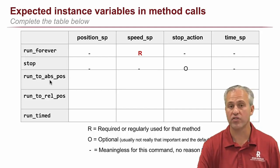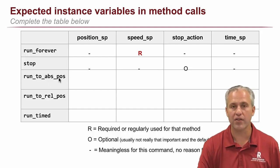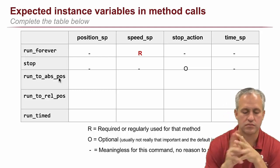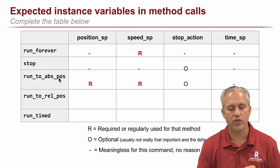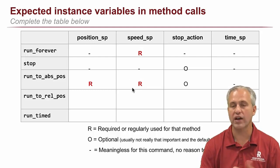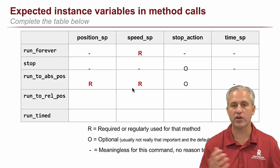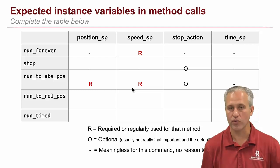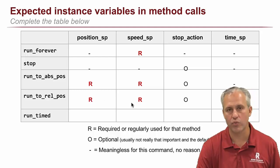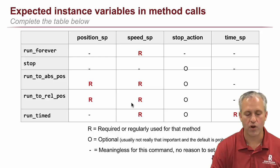Run to absolute position. This is the first one that's like meaningful. So think about this one for a minute. So which ones would you probably pass in to this command? So this one you should really pass in a position because you're going to have a target for it stops. The speed is regularly used. If you're doing a lot of them in a row and you're not changing the speed, the instance variable will stay set, right? There's nothing wrong. You don't have to set it every time. Stop action usually don't set and time doesn't really make any sense. Run to rel position is the exact same. So you need to set a target position. You need to set a target speed.